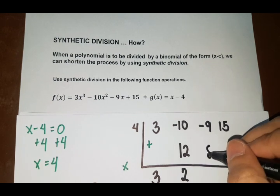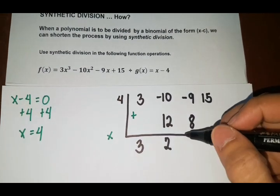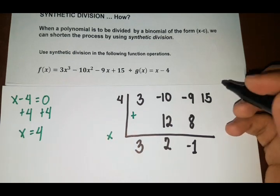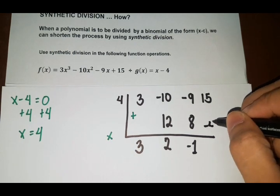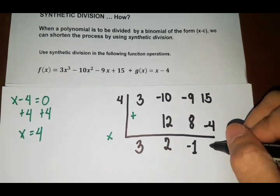2 times 4, that's 8. So negative 9 plus 8, that is negative 1. Negative 1 times 4, that's negative 4. So 15 minus 4, that is 11. Okay.